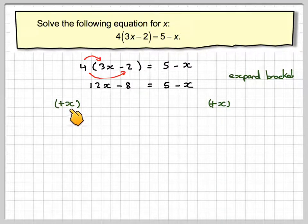12x plus x gives me 13x. We've still got minus 8. And then we've got equal to 5. And obviously minus x plus x gives me nothing on that side. We've just got a 5.